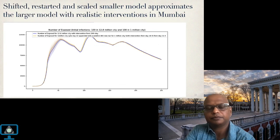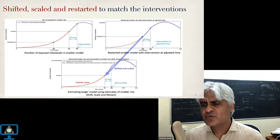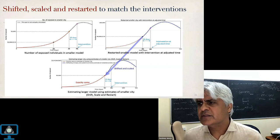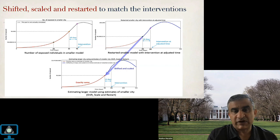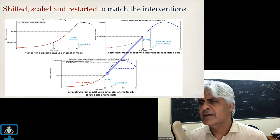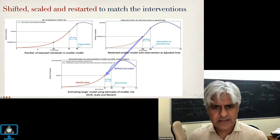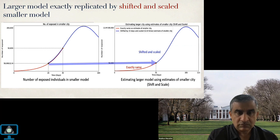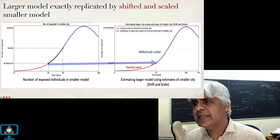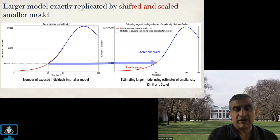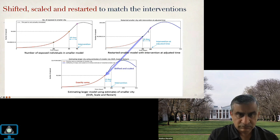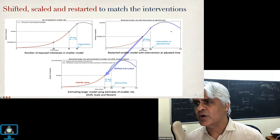So to clarify: first 35 days, we use the smaller model — it's the same as the larger model. Thereafter, we take the smaller model from day 20 onwards, scale it by a factor of 12.8, and call day 20 as day 35. You never run the larger model. That's why it's called shift and scale. Thereafter, we do a restart because we implement interventions at the right time on the smaller model, which also applies to the larger model, and then paste the paths together. Interventions don't need to be changed — all interventions go right through, because we're in a mean field framework.